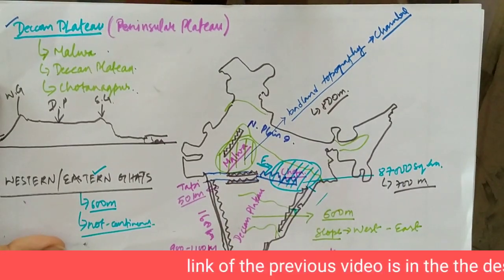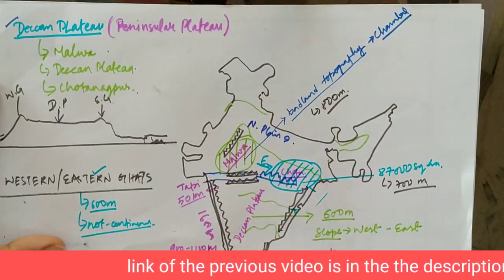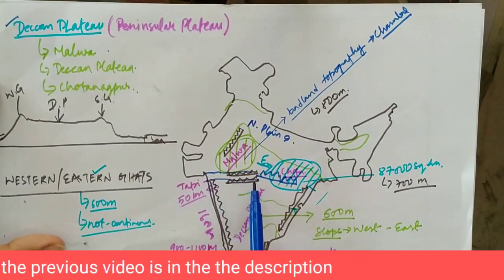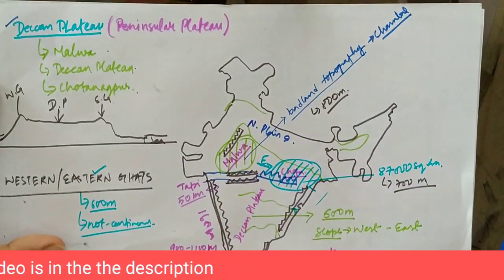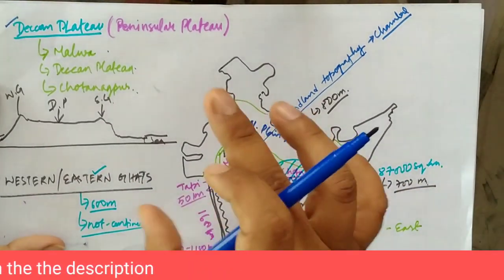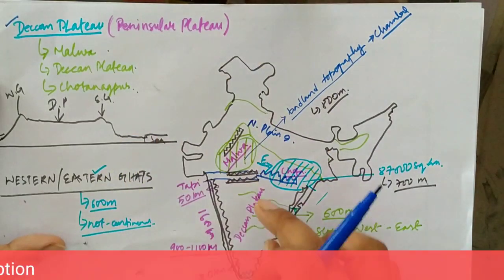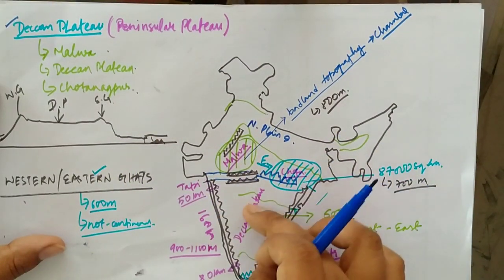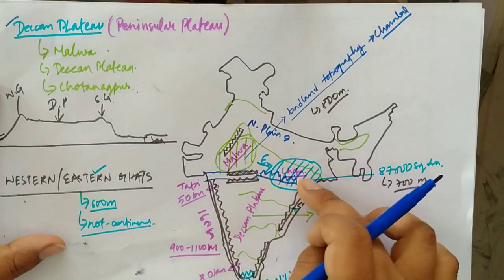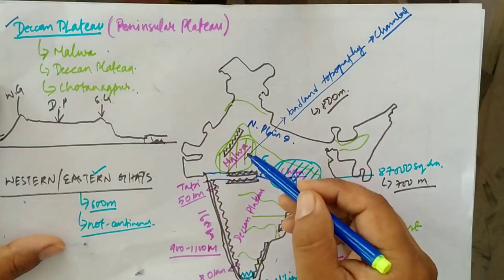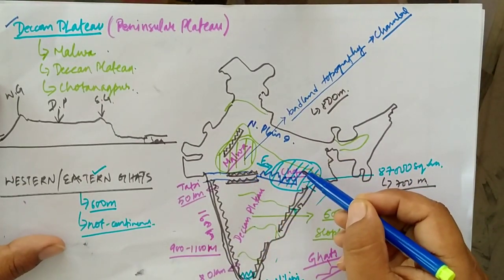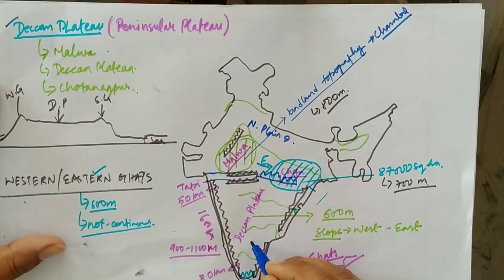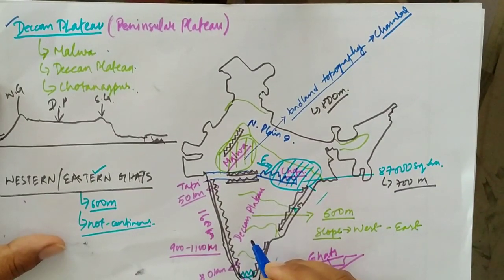Towards the north it is bounded by the Northern Plains, which we have discussed already in the previous video — the link is provided in the description. The Narmada and the Tapi rivers, which flow towards the west, divide the Peninsular Plateau into two halves: the northern half and the southern half.